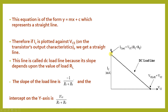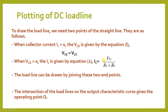The intercept where the line crosses the Y-axis is VCC by (RC + RE). The point on the Y-axis is IC = VCC / (RC + RE), and the point on the X-axis is VCE = VCC. We draw the DC load line using these two points — one on the Y-axis and another on the X-axis.